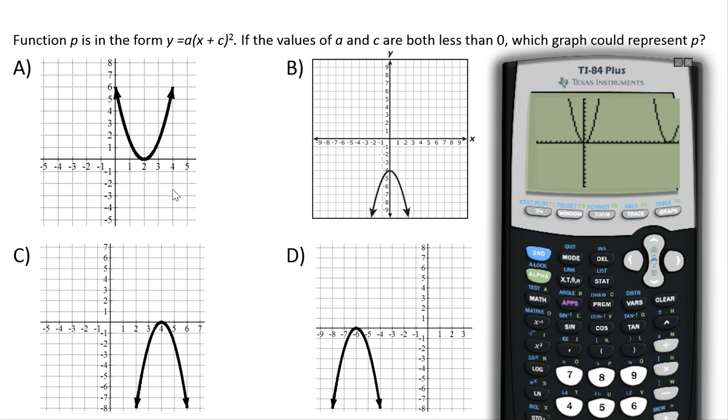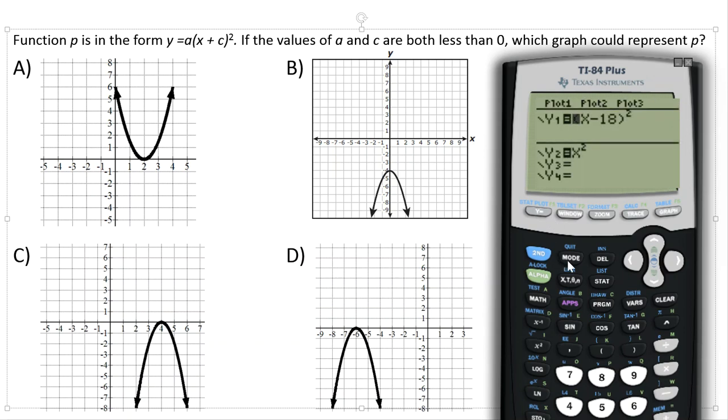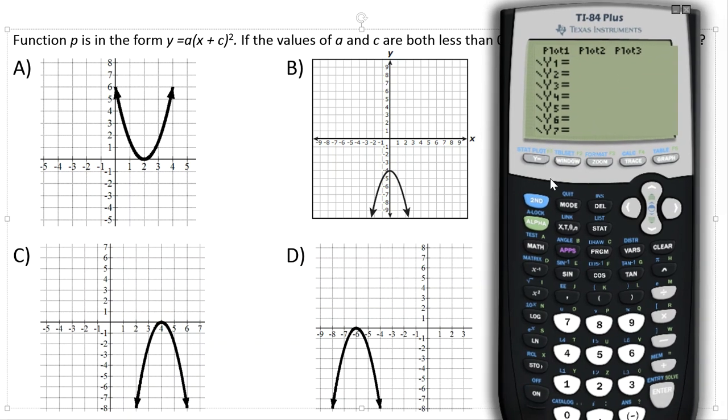If you're being asked a question like this, they want to know the general form. Like where is the parabola in general in relation to the x and y axis? So what we're going to do is we're going to go to our y equals screen, and we're going to make up some values for a and c that match the description. It says the values of a and c are both less than 0. That shouldn't be too bad. Let's just pick some values that are less than 0 for a and c.